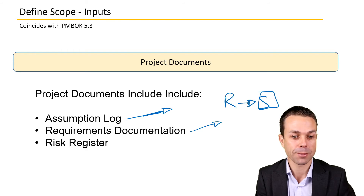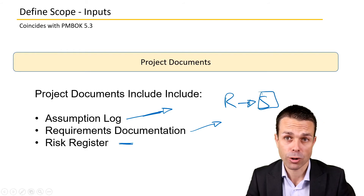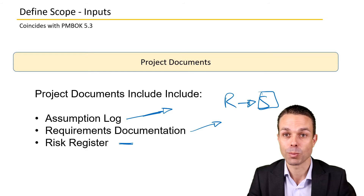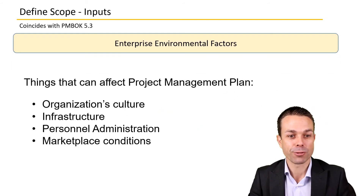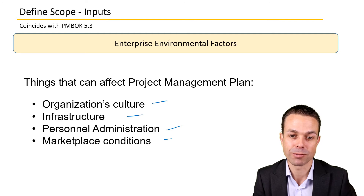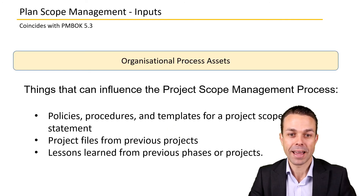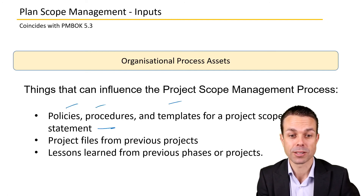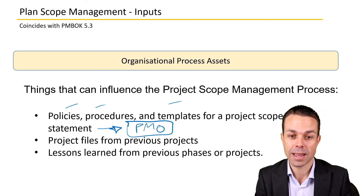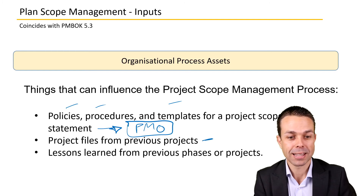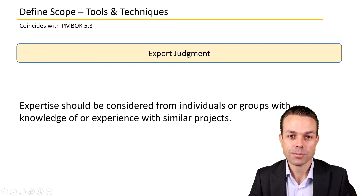Project documents such as the assumptions log capture what assumptions have been made to get to this scope. The requirements documentation is a big input because we need it to turn that into the scope for the project. The risk register shows what risks are involved — do we need to change the product slightly to avoid some risks, or can we take advantage of some opportunities? Enterprise environmental factors might include existing culture, infrastructure, systems, personnel administration, and marketplace conditions. Organizational process assets include policies, procedures, templates for a project scope statement, project files from previous projects, and lessons learned.